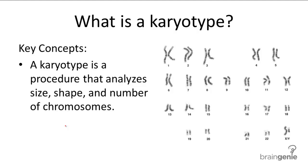A karyotype shows the size, shape, and number of chromosomes in an individual organism. The karyotype shown here is of a normal human male. To create a karyotype, scientists take cells from the individual, grow them in a lab, and then freeze them at metaphase of mitosis.